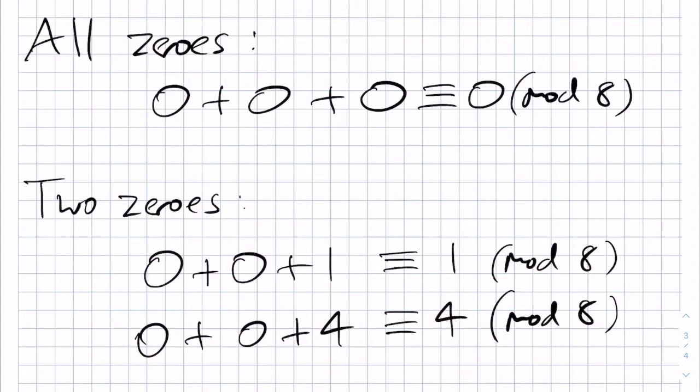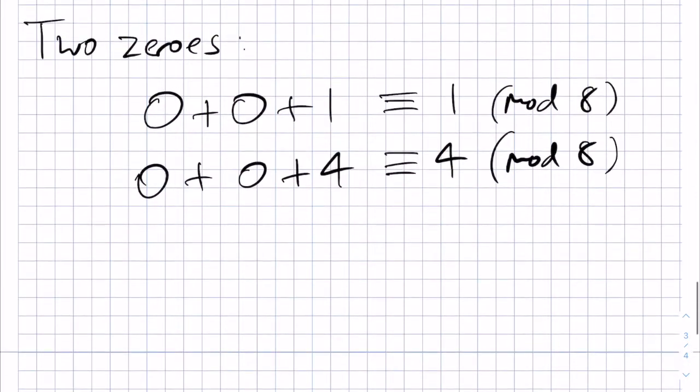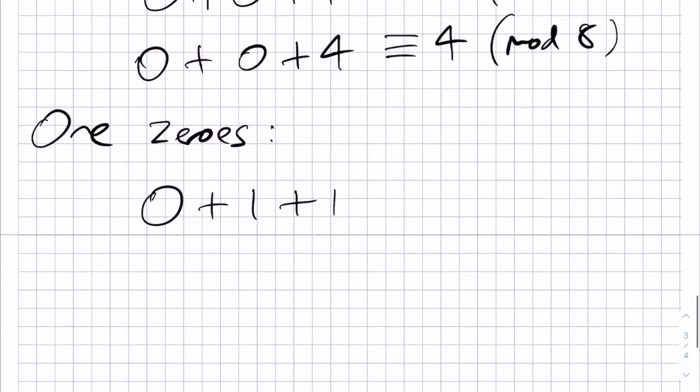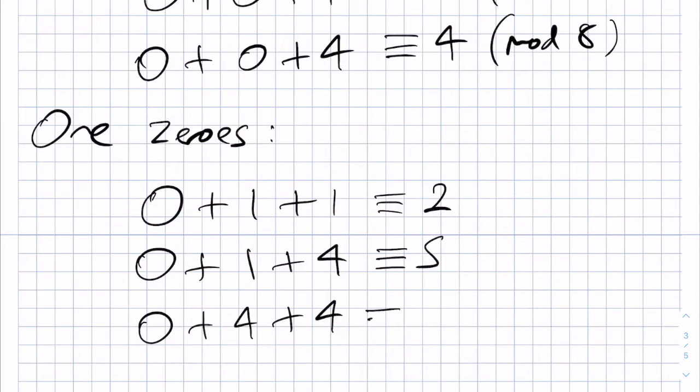The next case is just 1, 0. Here there are some more cases involved. We can have 0 plus 1 plus 1, or 0 plus 1 plus 4, or 0 plus 4 plus 4. The first gives us 2, the second one gives us 5, and the last one gives us 8, which is 0 in modulo 8.